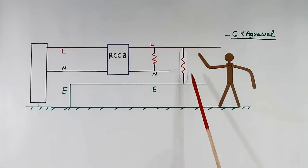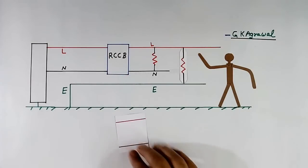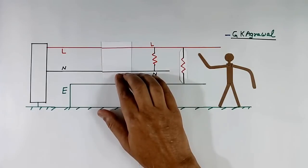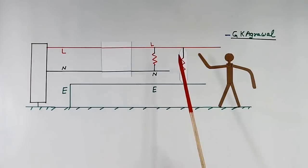If we want current in the load connected across line and earth, then what we will have to do? We will have to remove this RCCB. So I will remove this. I have removed. Now current will flow like this, and we can connect load across line and earth. We will get power also.